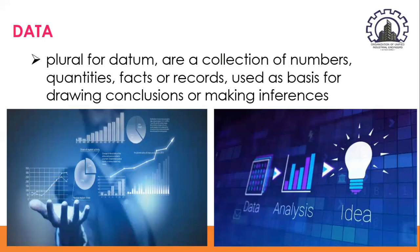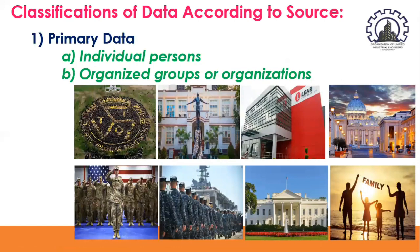Data also reveal unsatisfactory conditions that need to be improved. For example, the application of newly discovered facts and principles to remedy unsatisfactory conditions becomes the basis of human progress and the improvement of the quality of human life. The classifications of data according to source: first, we have primary data, and second, we also have secondary data. Let us discuss them one by one, starting with the primary data.